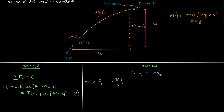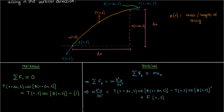Now the vertical forces will just consist of the vertical components of the tension, which are the tension multiplied by the sine of the angle where the tension is acting, and the external force capital F. The positive forces will be directed upwards, and the negative forces will be directed downwards, which means that this will be our force equation in the vertical direction.